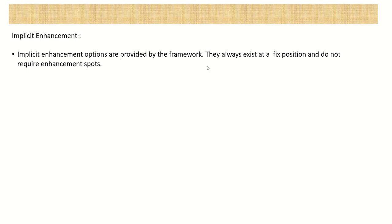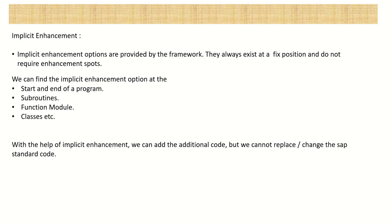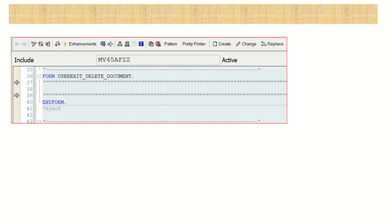We have implicit enhancement and explicit enhancement. The implicit enhancement options are provided by the framework - they are always at a fixed position and they do not require any enhancement spots for the implementation. We can find the implicit enhancement options at the start and end of a program, at the start and end of subroutines, function modules, classes, etc. With the help of implicit enhancement, we can add additional code but we cannot replace or change the SAP standard code.